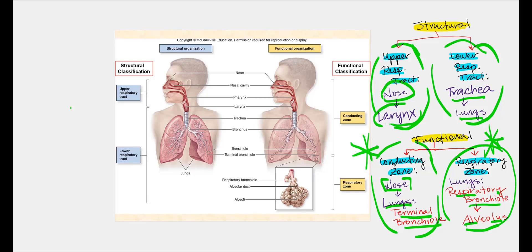Oxygen comes from the air that we breathe in, and carbon dioxide is produced by our tissue cells. Please make sure that the upper respiratory tract includes the nose to the larynx, so don't get this confused with the lower respiratory tract, which is from the trachea to the lungs.